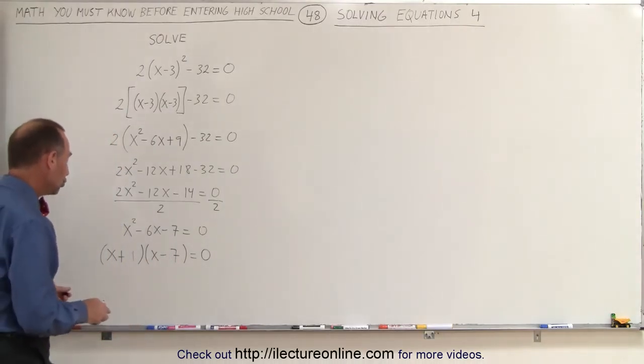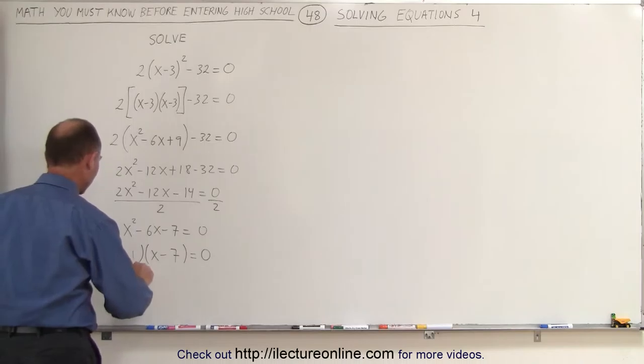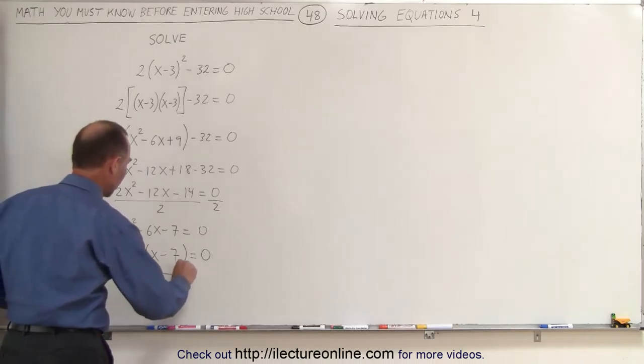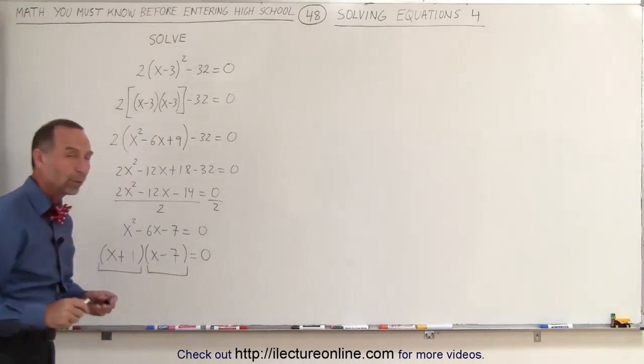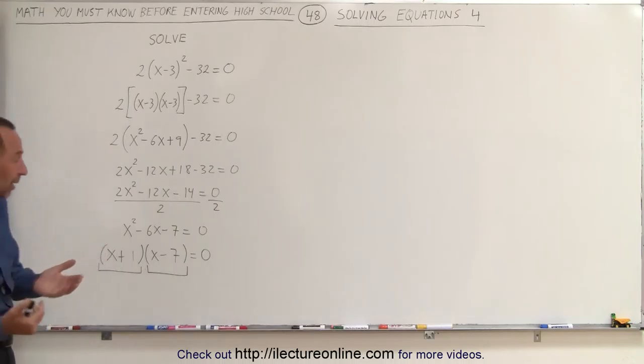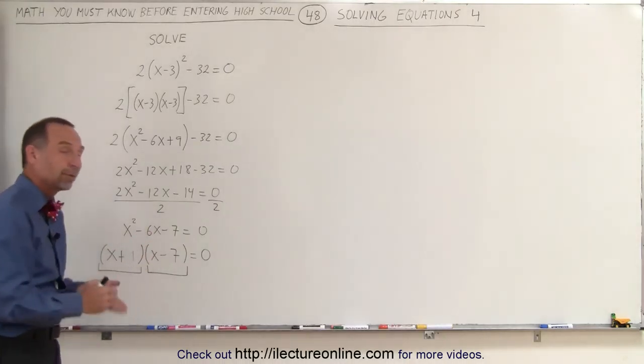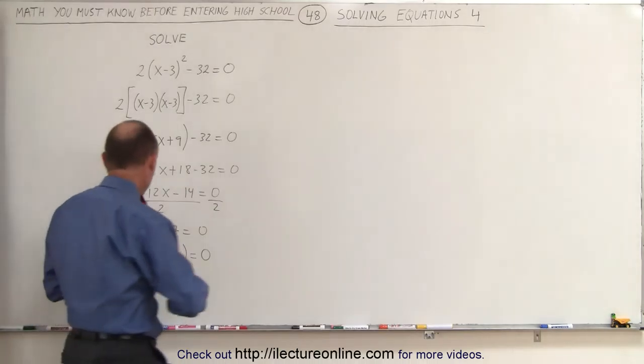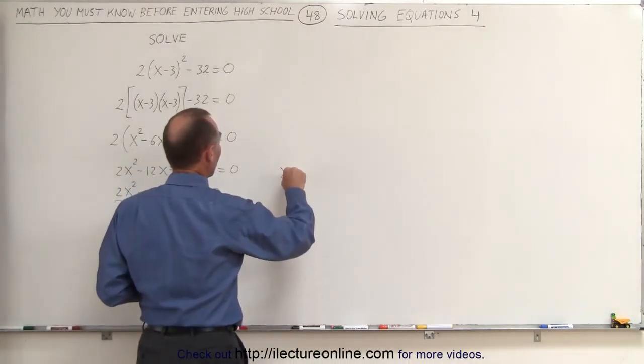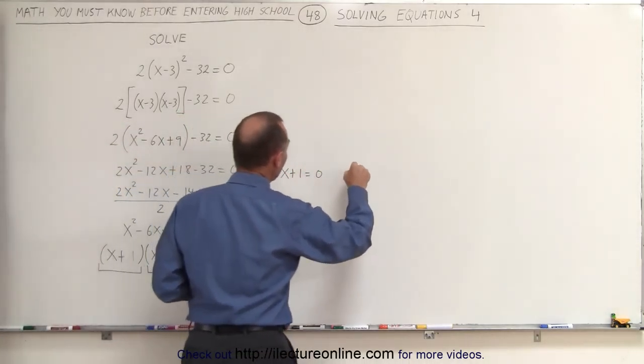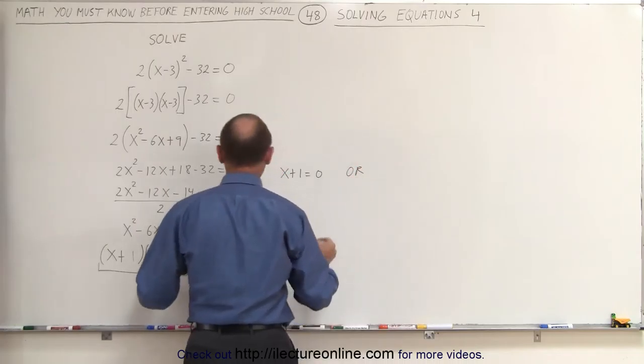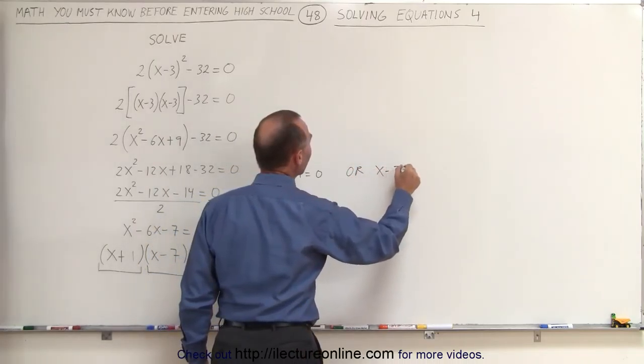Now we have two binomials multiplied together, which gives us 0. Whenever we multiply two things together and get 0, that means either the first or the second one must equal 0. Which means x plus 1 must equal 0, or x minus 7 equals 0.